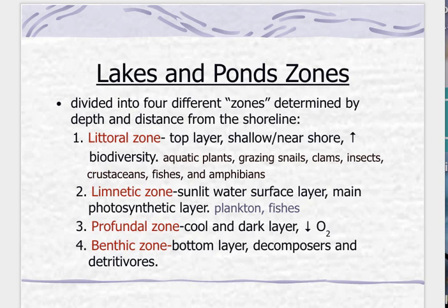The limnetic zone is usually where you go to fish. Then as you go deeper, you reach the profundal zone — this is the cool, dark layer. As you go down, you decrease O2, so you're not going to see a lot of photosynthetic plants or animals. And then on the bottom, same as the ocean, you have your benthic zone — that's your bottom level layer.